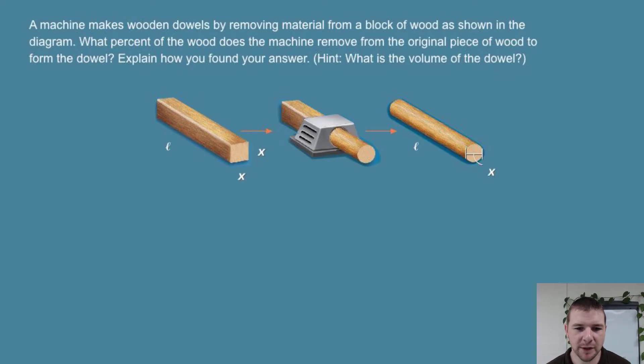What percent of the wood does the machine remove from the original piece of wood to form the dowel? Explain how you found your answer. What is the volume of the dowel?